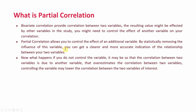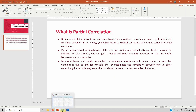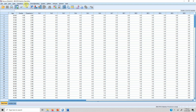You can get a clearer and more accurate indication of the relationship between the two variables. If you do not control the variable, it may be that the correlation between the two variables is due to another variable that overestimates the correlation between them. Controlling the variable may lower the correlation between the two variables of interest.